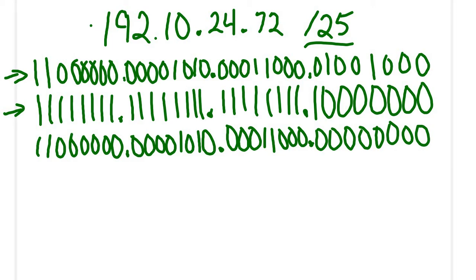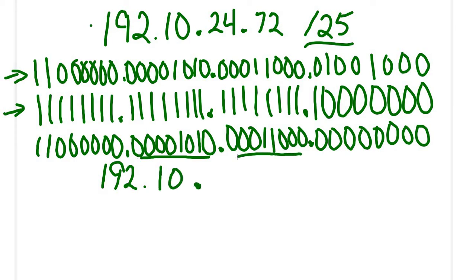If I take this IP address, then that's going to be 192 in my first octet. Converting my second octet back into decimal, I get a 10. My third octet, when I convert it back into decimal, I get a 24 still. And my fourth octet, when I convert it back into decimal, I get a 0. So that is my network address: 192.10.24.0.